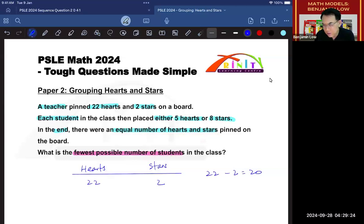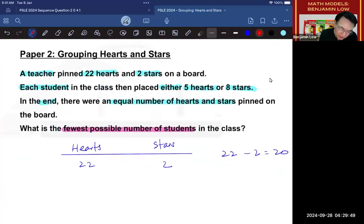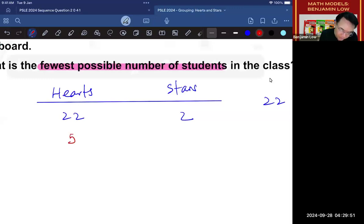Then let's consider if there were an equal number of people coming up to put hearts and stars. So one person puts 5 hearts, the next person puts 8 stars, the next person puts 5 hearts, the next person puts 8 stars, and so on and so forth. So 5, 8, 5, 8. What would happen if you do that?